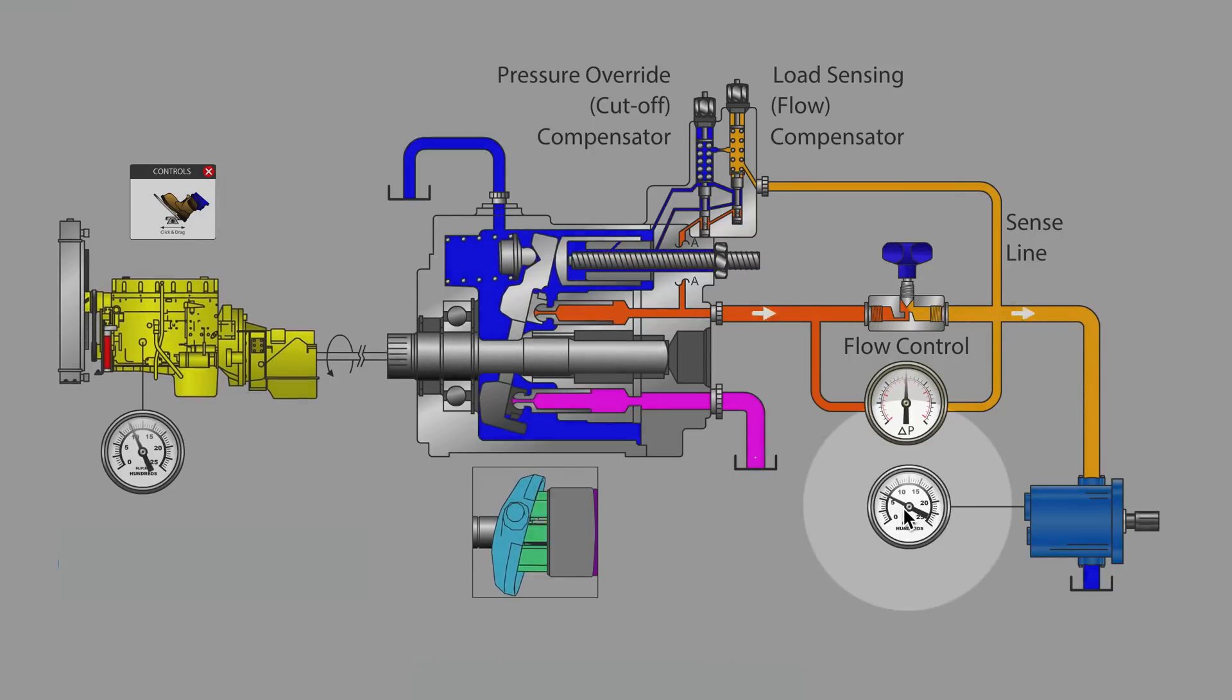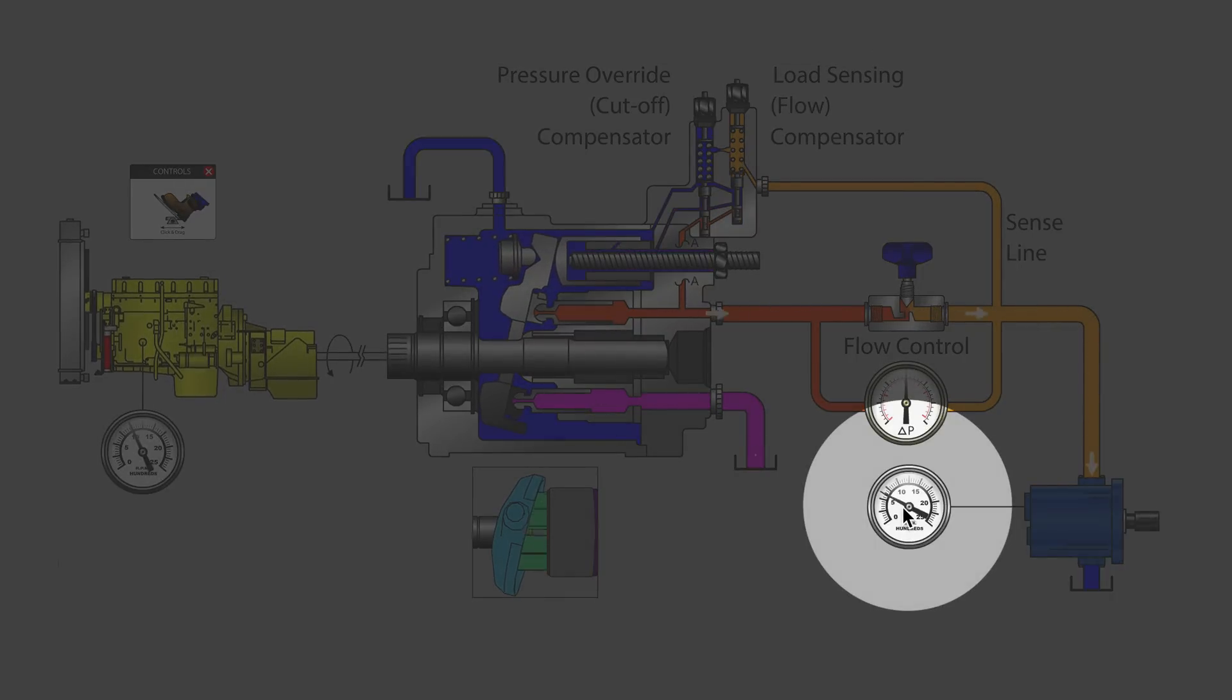So keep an eye on the tachometer that's monitoring our hydraulic motor, and I'll increase the RPMs of the diesel engine over here on the left. And what you should be noticing is the tachometer for the hydraulic motor isn't changing. Now I'll back the throttle down on the diesel engine and our motor is staying nice and steady.